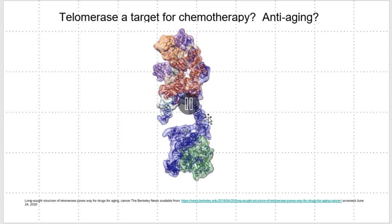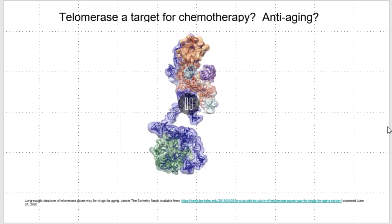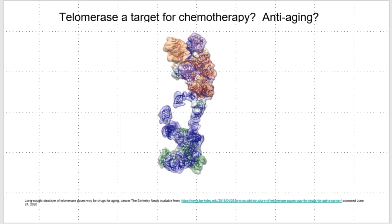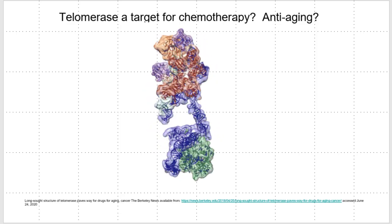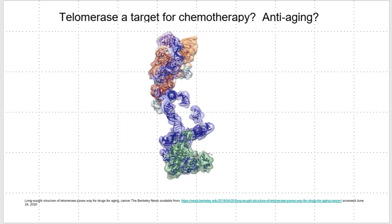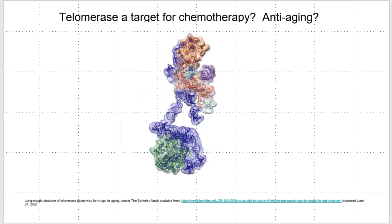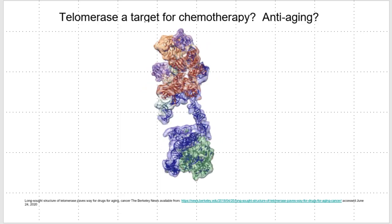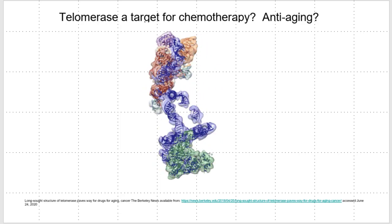The structure of human telomerase was only recently solved in 2018 by the research groups of Kathleen Collins and Evan Nguyen at UC Berkeley. Knowing the structure of the enzyme is incredibly useful and informative for intelligent drug design targeting the enzyme, so this could potentially lead to new therapeutics.